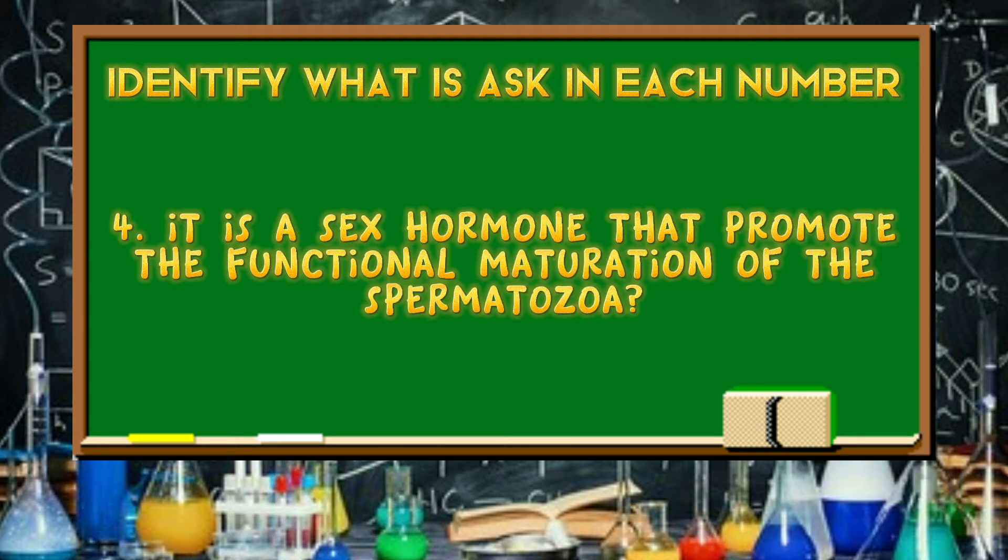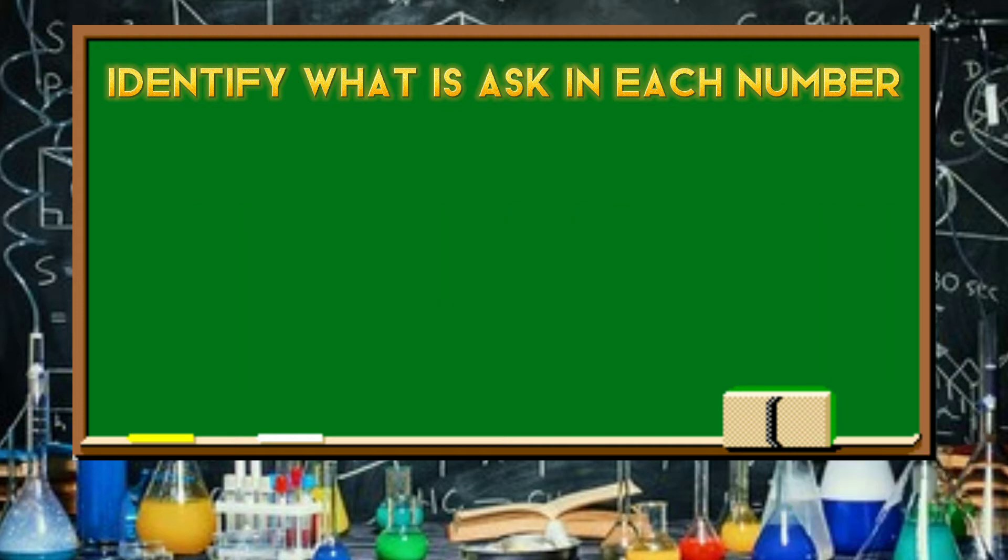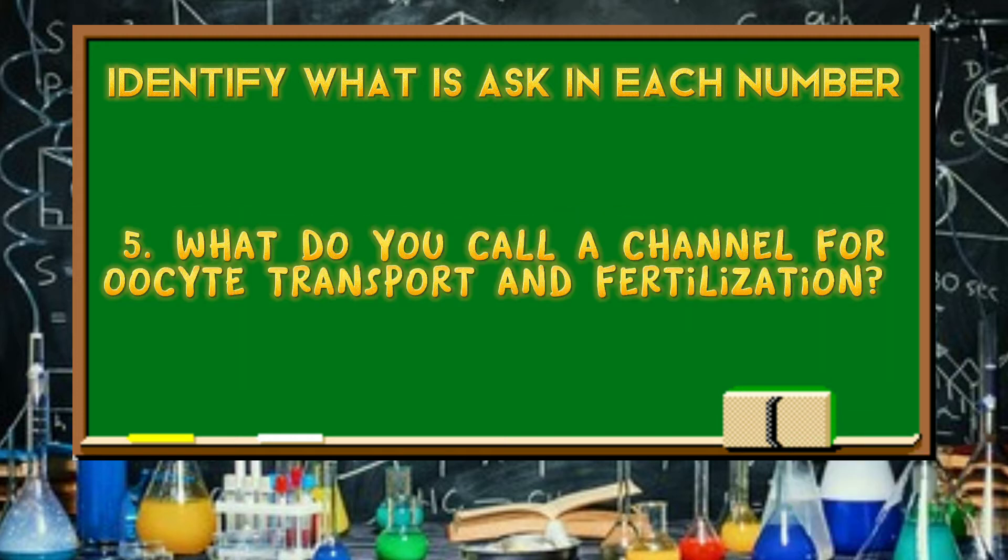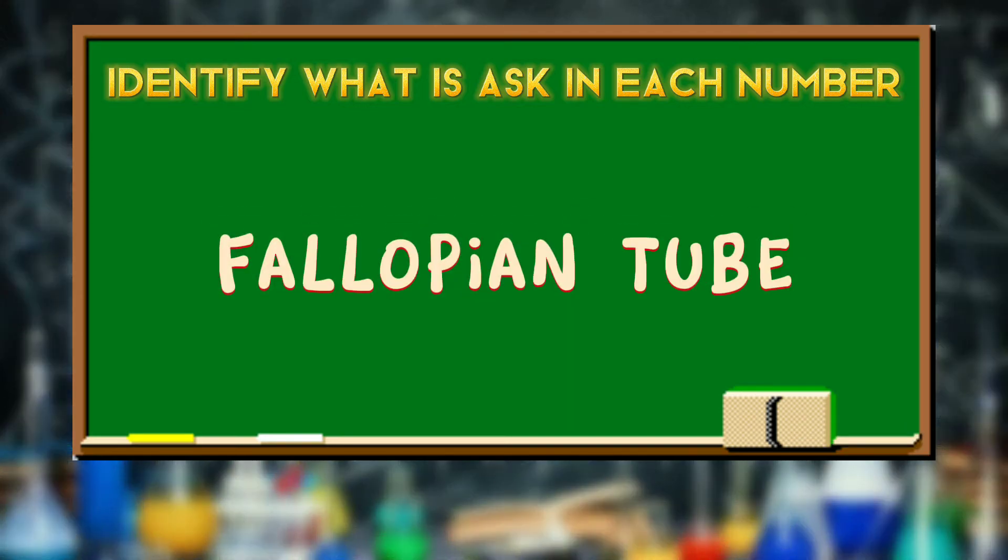It is a sex hormone that promotes the functional maturation of the spermatozoa. Testosterone. What do you call a channel for oxygen transport and fertilization? Fallopian Tube. Great, class! You really mastered the lesson that we tackled last meeting.